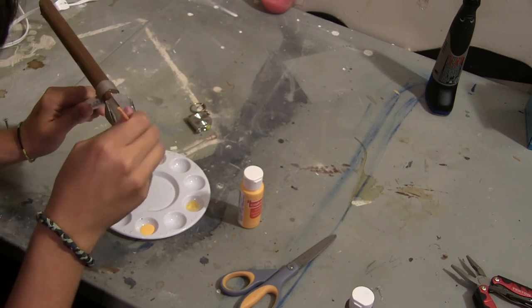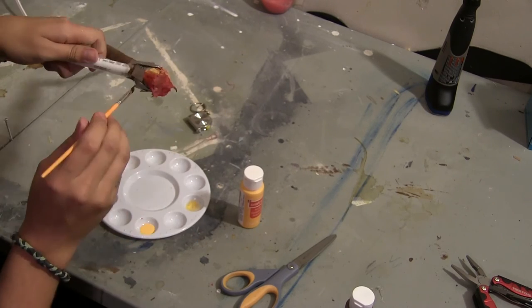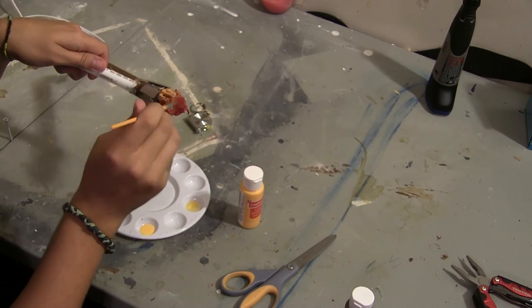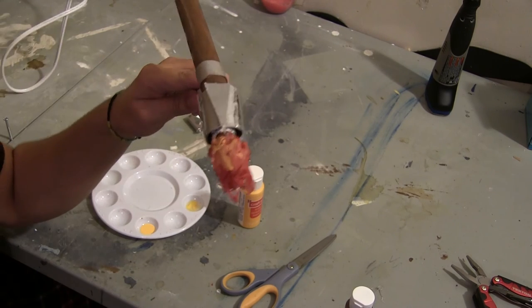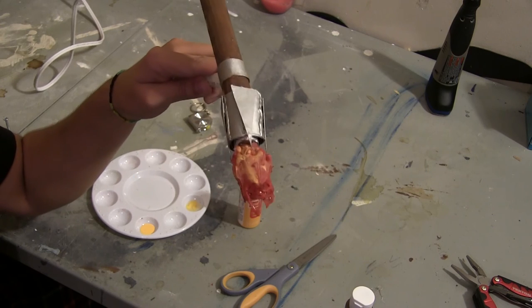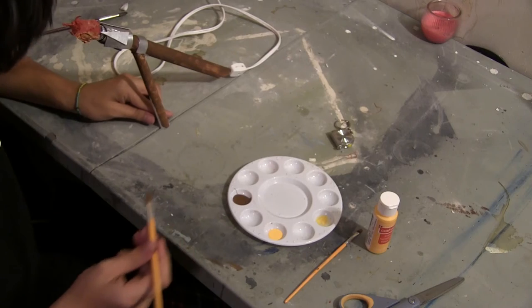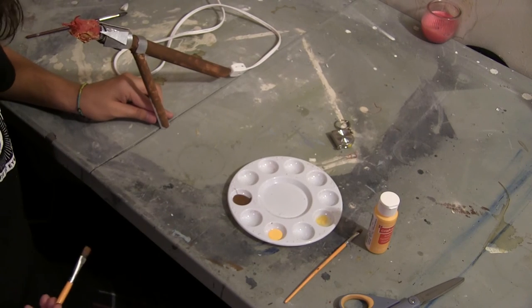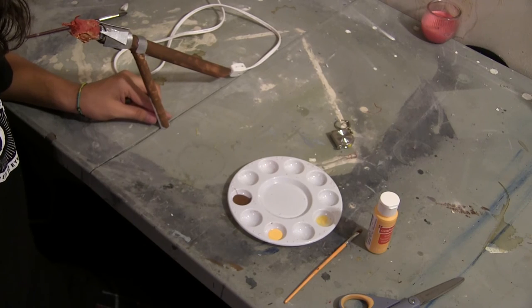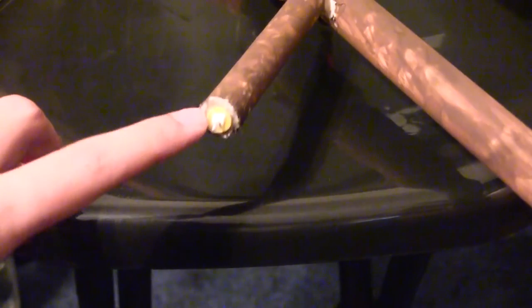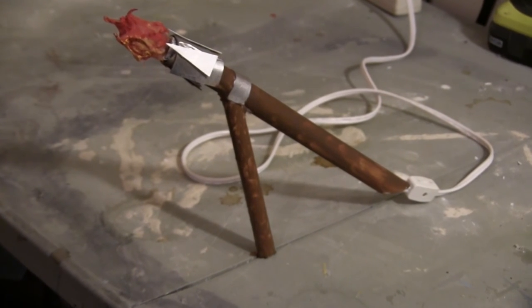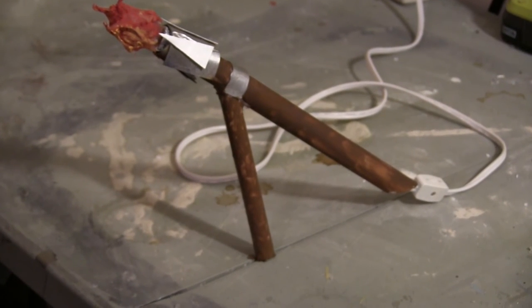And now we're taking a yellow and just highlighting the flame with the yellow over the red. So it should look like this. And then we painted the half inch piece of PVC pipe brown. And then we took a thumbtack and glued it into the half inch PVC pipe. So the tip of it is sticking out. And this is what it looks like when it's all finished painted.